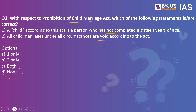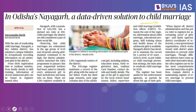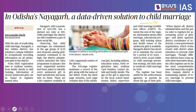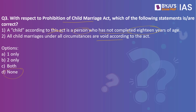Regarding the first statement: the act specifies that for a male, the age is 21 years, and for a female, it is 18 years. The statement uses gender-neutral terms saying 18 years for all persons, which is incorrect. Under the Prohibition of Child Marriage Act, a child means a male who has not completed 21 years of age or a female who has not completed 18 years of age. So the first statement is wrong.